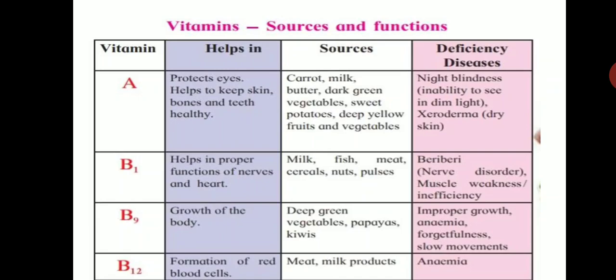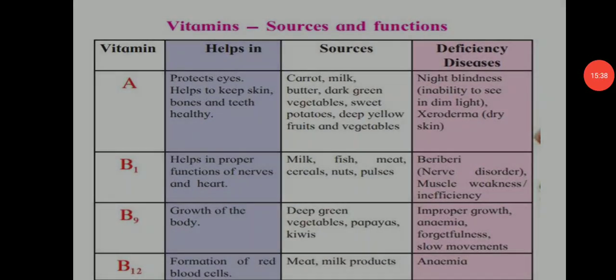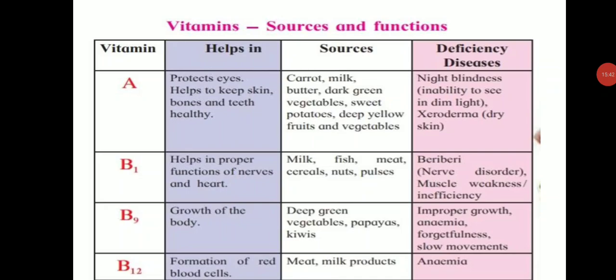Vitamin A helps in the protection of eyes and helps to keep skin, bones, and teeth healthy. Sources of vitamin A include carrot, milk, butter, dark green vegetables, sweet potatoes, and deep yellow fruits and vegetables. Deficiency of vitamin A causes night blindness — inability to see in dim light — and xeroderma, which means dry skin.